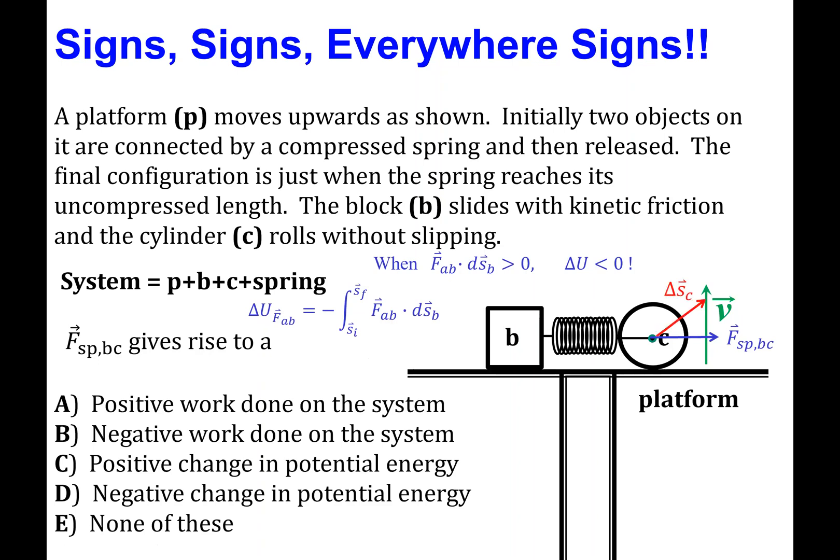Now, the displacement vector, or in this case, the total displacement vector, is going to be some vector pointing off at some angle like this because it has to incorporate both the translation to the right of the cylinder as it rolls,